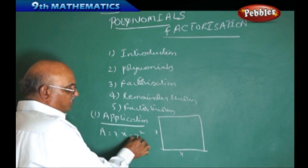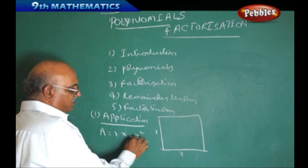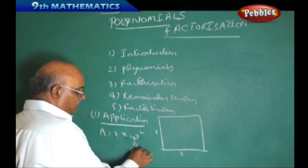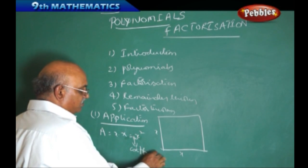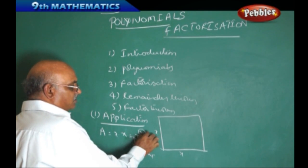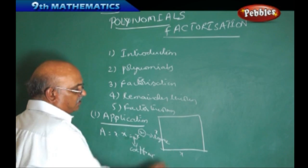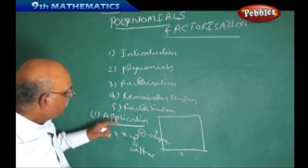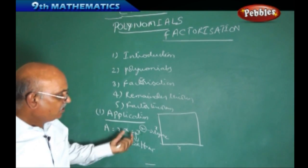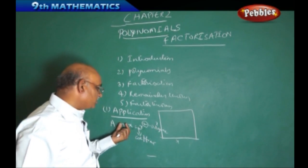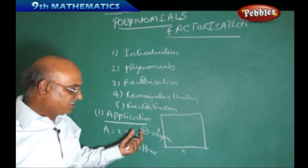Before x square, we do not have any term which we are calling a coefficient. In the same manner, the power 2 is called the degree. Generally, the polynomial structure — we are going to define what is the variable and then what is its importance.